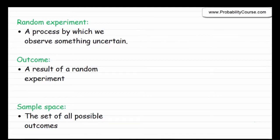In this video, I would like to talk about random experiments and probability axioms. A random experiment is a process by which we observe something uncertain. For example, you toss a coin and you observe heads or tails. Because we don't know beforehand which one will appear, it's a random experiment.